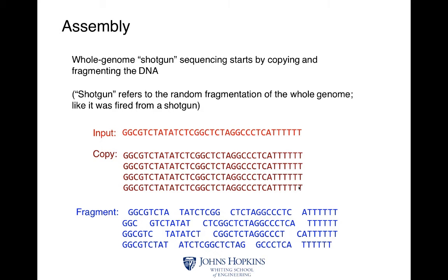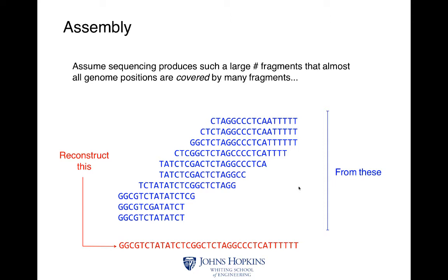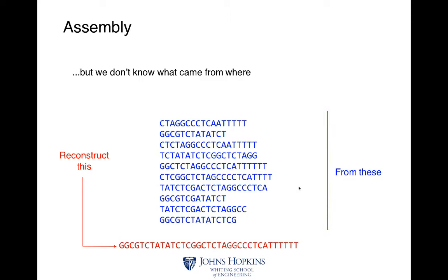The way whole genome shotgun sequencing works is we just start copying and fragmenting the DNA. What we ideally want to do is make enough copies of our DNA and fragment it in enough positions so that we're able to cover every single one of these original sequences with enough coverage. We capture all these sequences multiple times in different reads. Then we want to align them one after another based on their overlaps and try to see what kind of consensus sequence we can build. But because we don't know where the reads came from and because we can have repeats in between, aligning them in that nice neat format isn't always that simple.